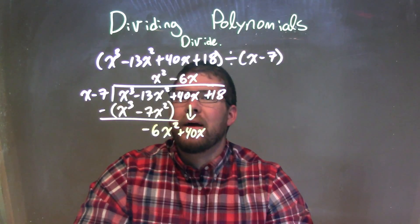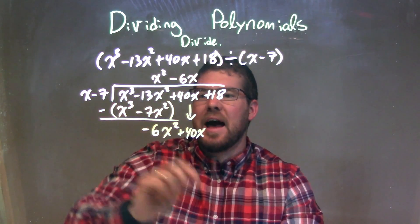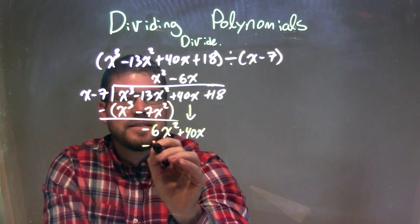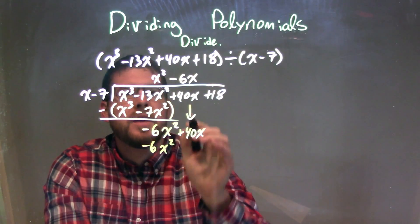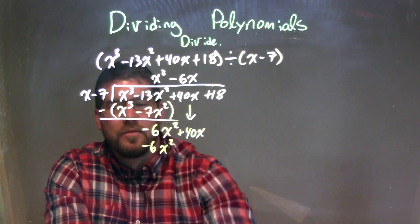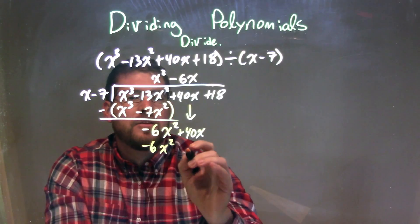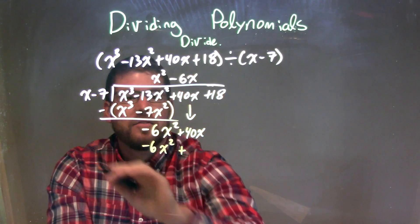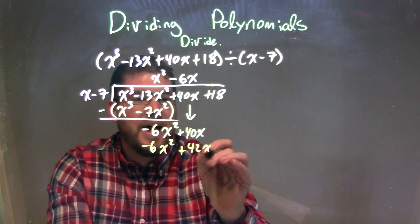We're going to multiply: minus 6x times x gives me minus 6x squared, which it should, and the minus 6x times a minus 7 comes out to be a positive - a negative times a negative is a positive - 42x.